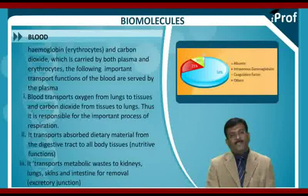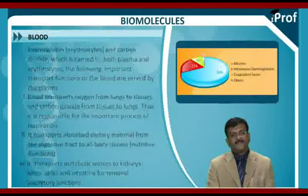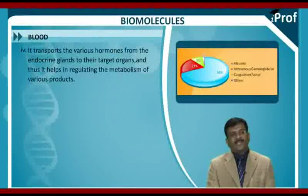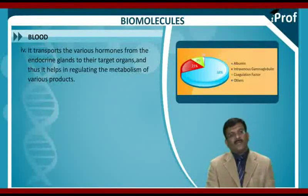Third, blood transports metabolic waste to the kidneys, lungs, skin, and intestine for removal — that is, blood also involves in excretory functions. Blood transports various hormones from the endocrine glands to their target organs, and thus helps in regulating the metabolism of various products.